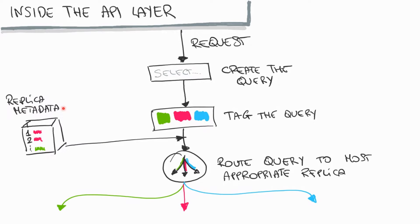If we have some metadata somewhere — maybe in a table, maybe in a cache, maybe in a file — that says all light-blue queries must be, or if the replica is available should be, served by the biggest replica you have, then we can figure out a light-blue query is coming in, look up the metadata, and decide: I have a light-blue query, I know the best place to serve it is the 16 vCore replica, so let's send it there. Right now I'm doing exactly this, and I've prepared the code — let me switch to the code right away.